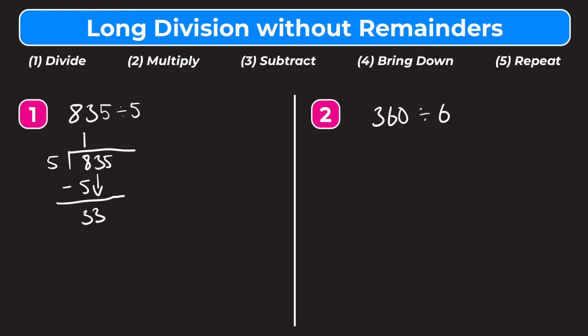Our last step is repeat, so we ask how many whole groups of 5 go into 33. 5 times 6 is 30 and 5 times 7 is 35, so we can't quite fit 7 — it's going to be 6. We write the 6 on top of the 3. Next step is multiply: 6 times 5 is 30. Next step is subtract: 33 minus 30 leaves us with 3. Then bring down the 5.